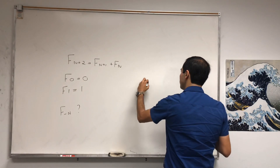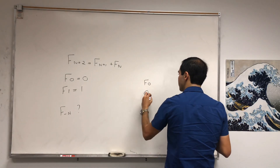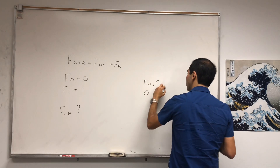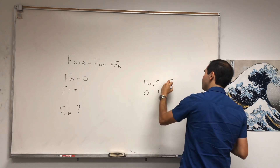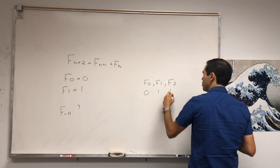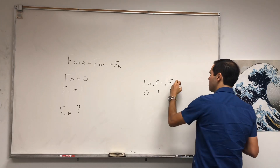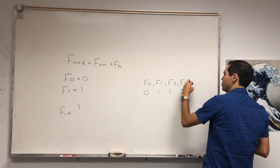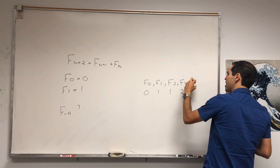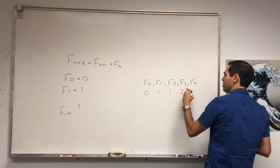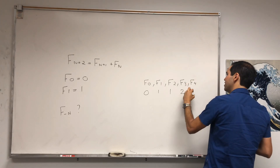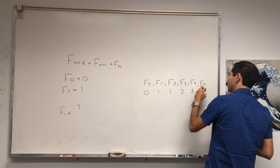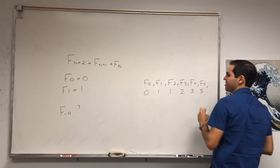So suppose we start with F0, which is 0, and then F1, which is 1. F2, which is the sum of the two, which is 1. F3, which is the sum of those two, which is 2. And then F4, so 1 plus 2 is 3. F5, and 2 plus 3 is 5, et cetera.